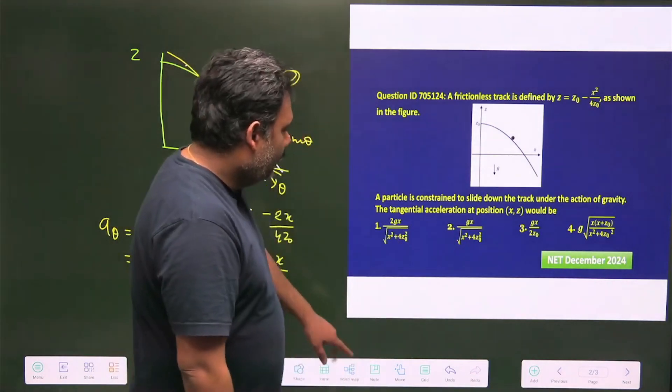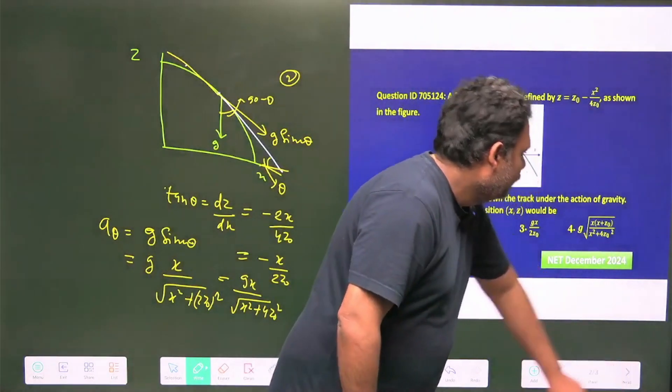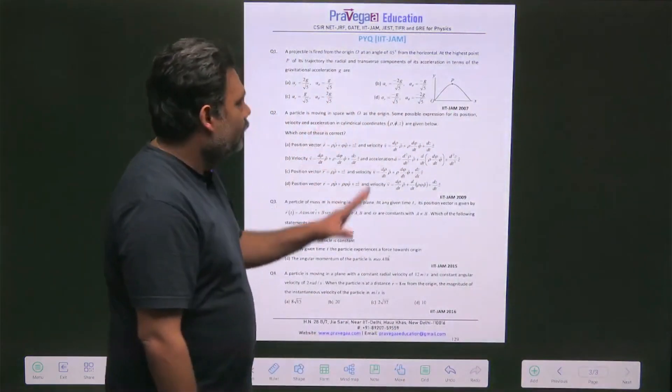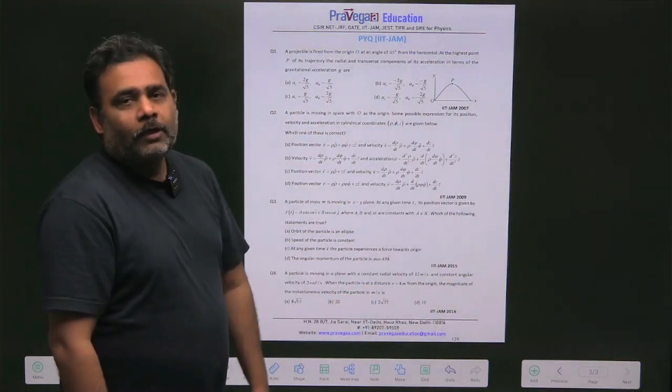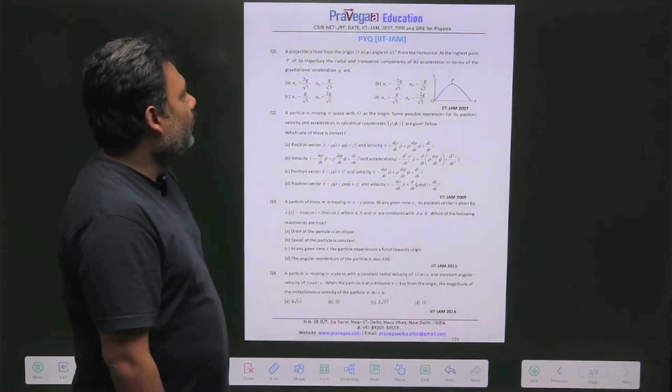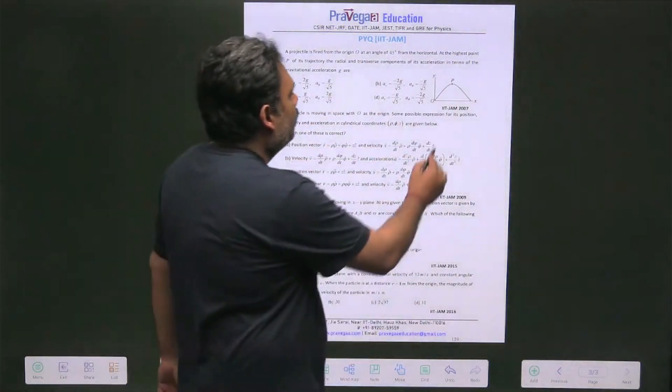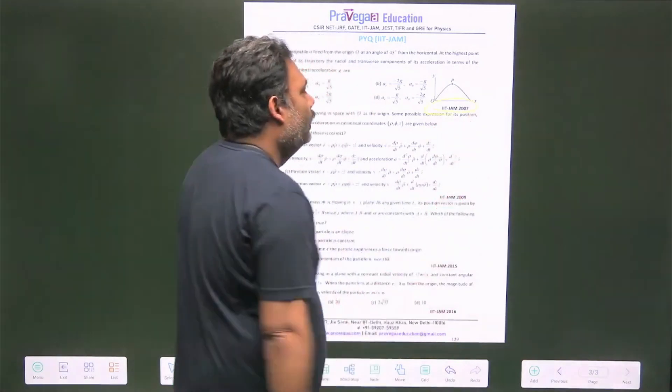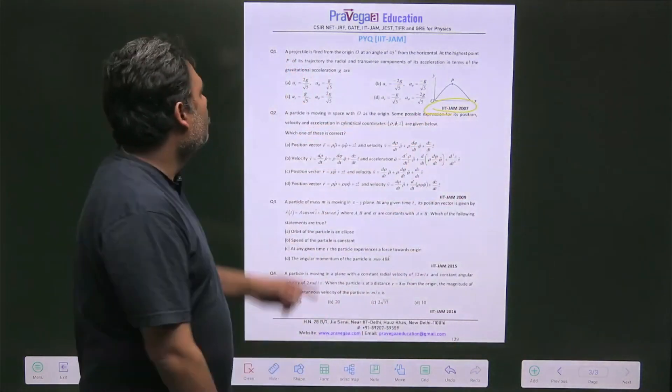So now you can see in the next slide, just go to our study material page number 129, that is PIQ of IT JAM. There was a question and this is a question in IT JAM 2027, look at this question.